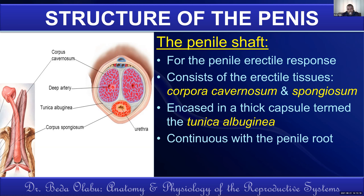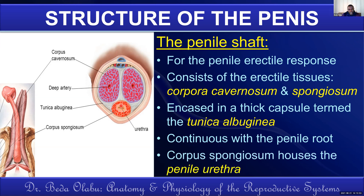The shaft of the penis is continuous with the root. The bulb of the penis is continuous with the corpus spongiosum — we can say the corpus spongiosum radiates from the bulb, while the corpora cavernosa radiate from the crura of the penis. Notably, the corpus spongiosum contains the urethra — the penile urethra or spongy urethra is contained within the corpus spongiosum.